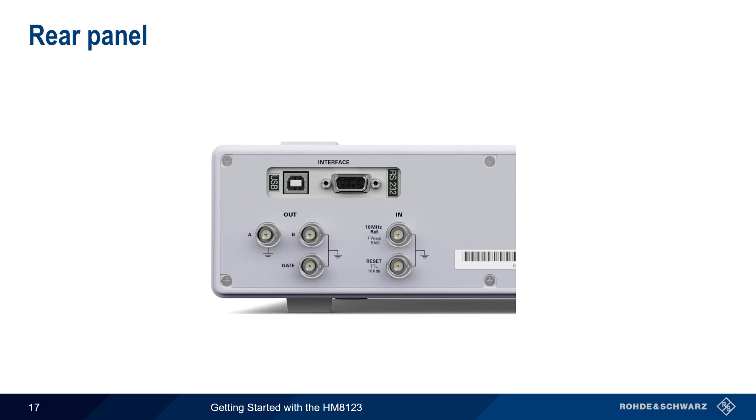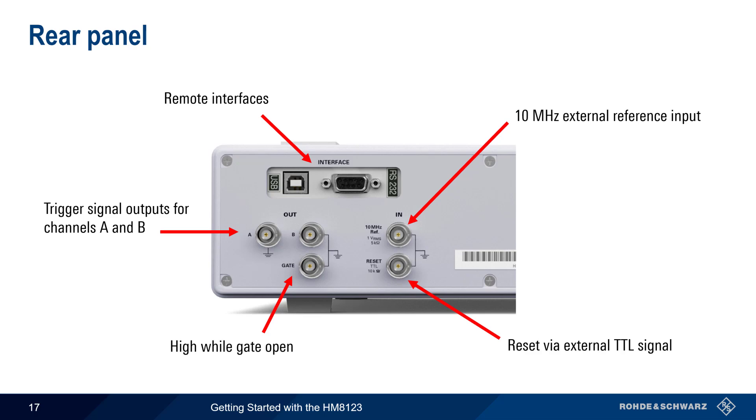The last topic is Rear Panel Connectors. The HM8123 comes standard with USB and RS232 for remote control, and an optional GPIB interface is available. The HM8123 can accept a 10 MHz external reference input, and an external reset connector can be used to reset measurements in the same way as the reset button on the front panel. The gate connector outputs a voltage over the gate time, that is between the start and stop of the measurement gate. And trigger signal outputs are provided for both channel A and channel B.